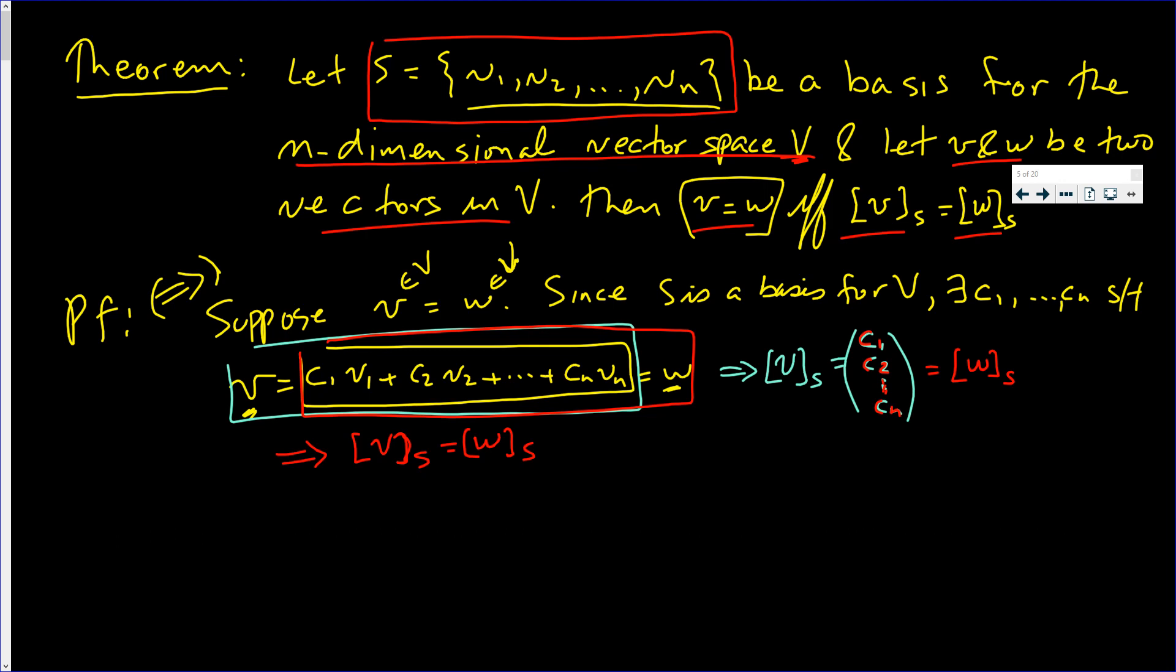Now to go the other direction is straightforward because, let me use a different color, going in the other direction if we know this is true, well I'm still saying that those two are equal, I'm just giving it a name.